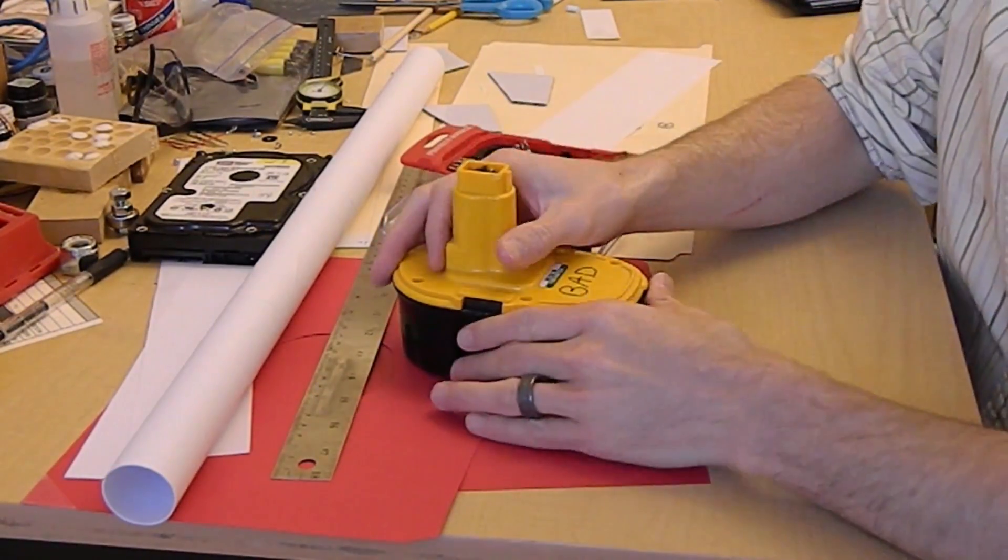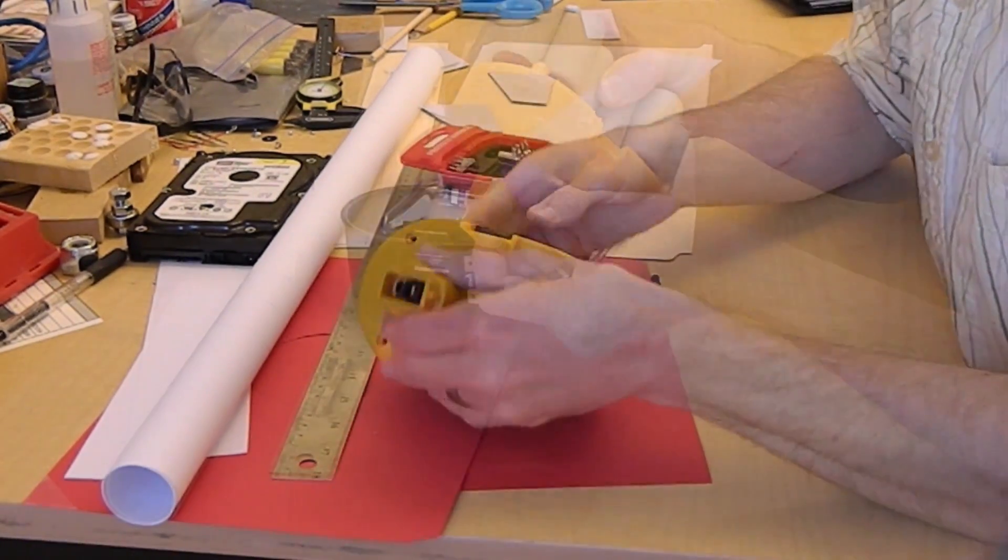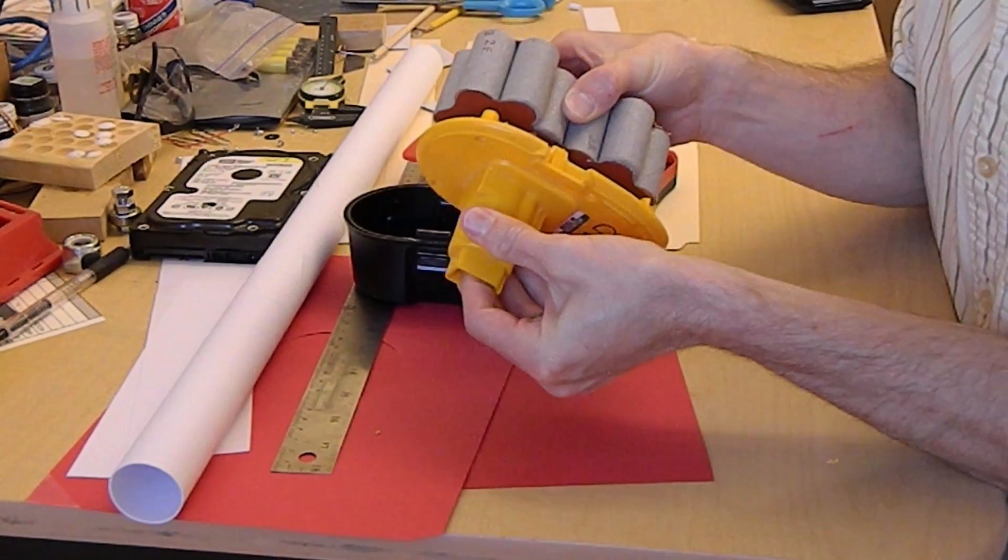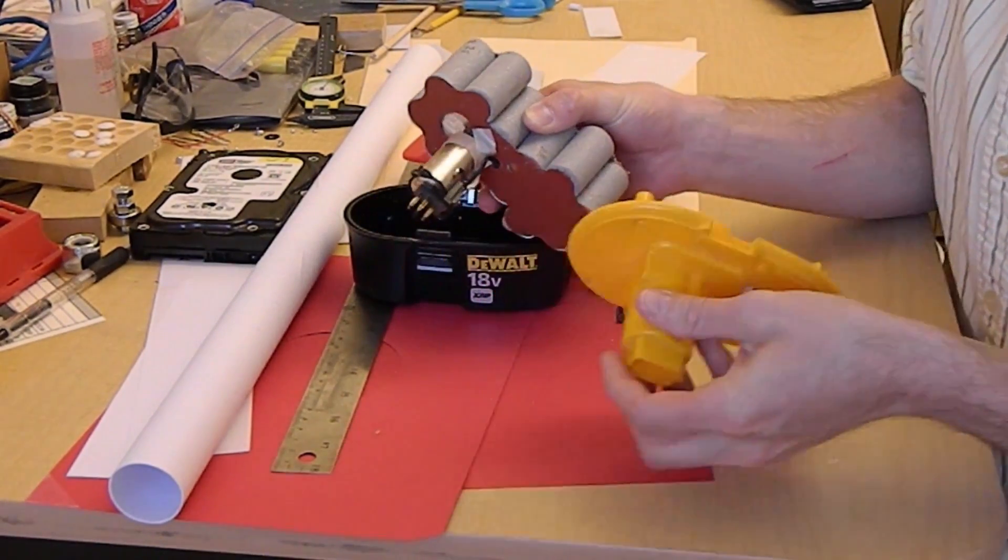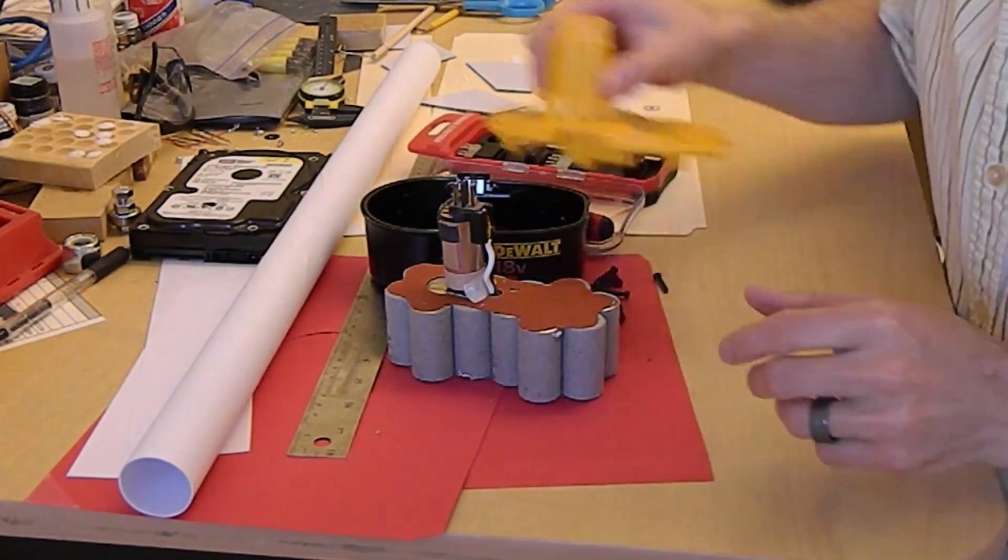So the first thing I'm gonna do is remove these six screws here in the top of the battery. They have Torx heads on them. I'll have to push these contacts down through the top here so that I can remove this top cell which is extending here into the stem of the battery.